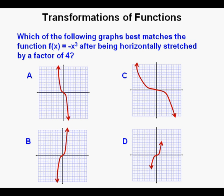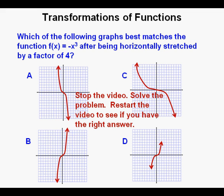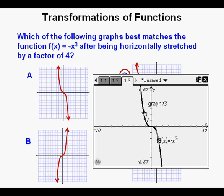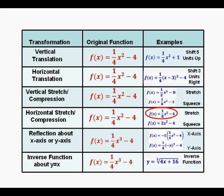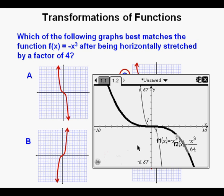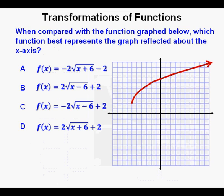Next problem: which of the following graphs best matches the function f of x equals negative x cubed after being horizontally stretched by a factor of 4? The correct answer is c — none of the others includes a horizontal stretch. We graph f of x equals negative x cubed, which matches answer choice A. Going back to our chart, for a horizontal stretch of 4, we use 1 over 4 cubed — which is 1 sixty-fourth — in the coefficient, and graphed, this matches answer choice C.